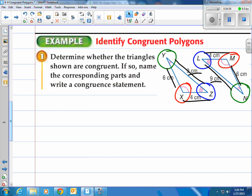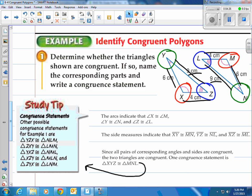The arcs indicate that angle X is congruent to angle M, angle Y is congruent to angle N, and angle Z is congruent to angle L, which I verified, as well as the sides. Since all pairs of corresponding angles and sides are congruent, the two triangles are congruent. One congruent statement is triangle XYZ is congruent to triangle MNL. That's one way to write it.